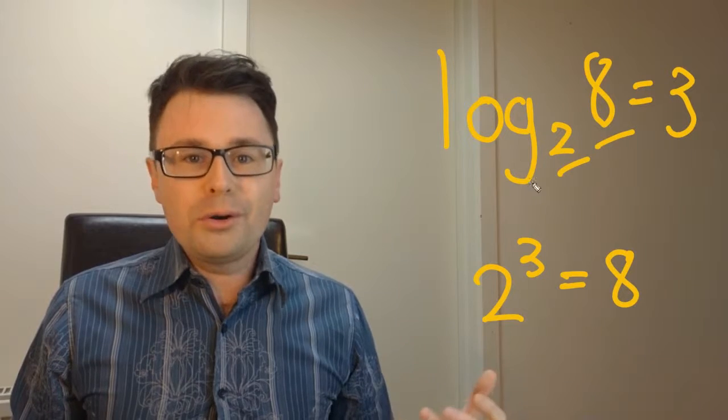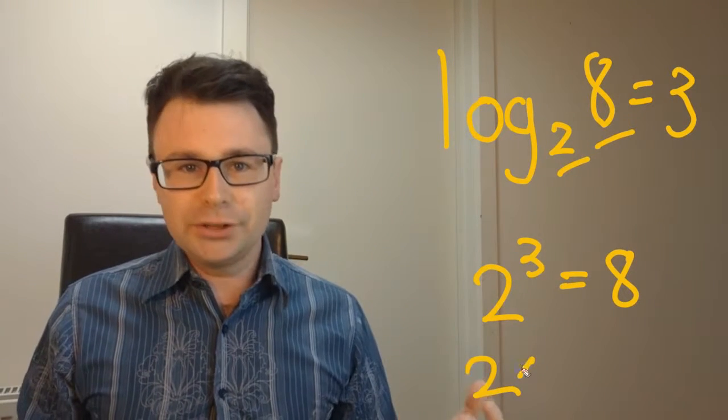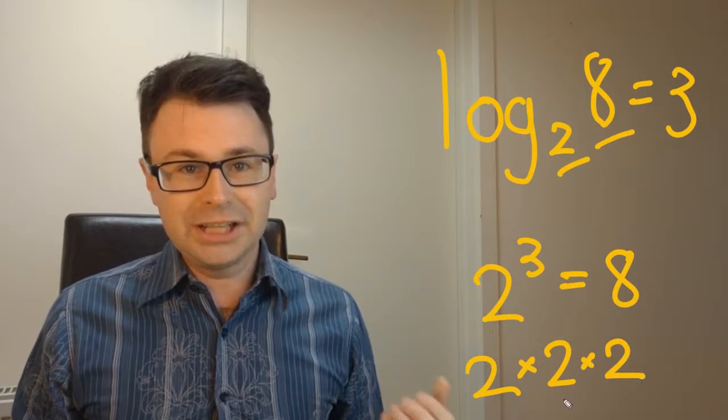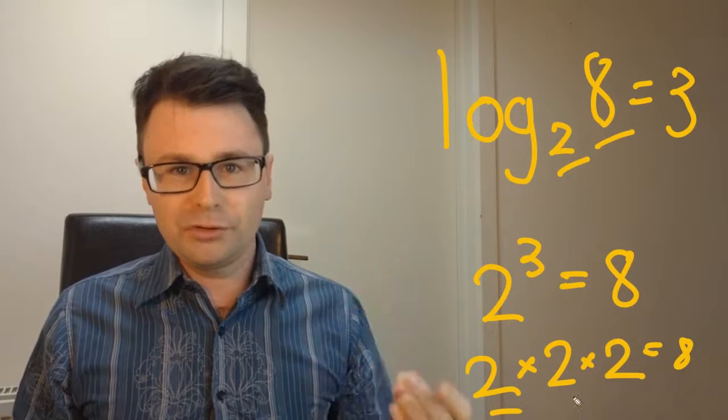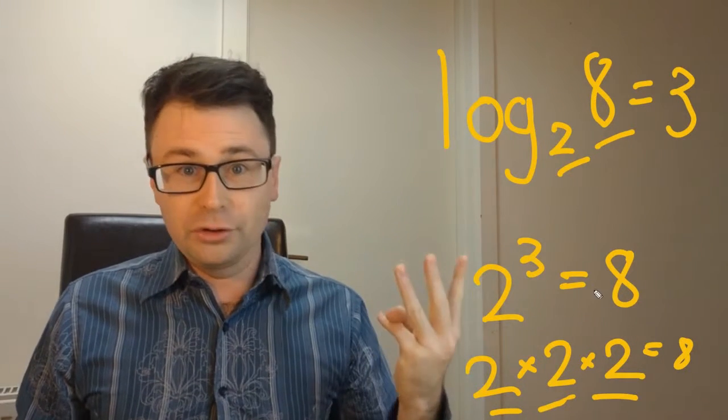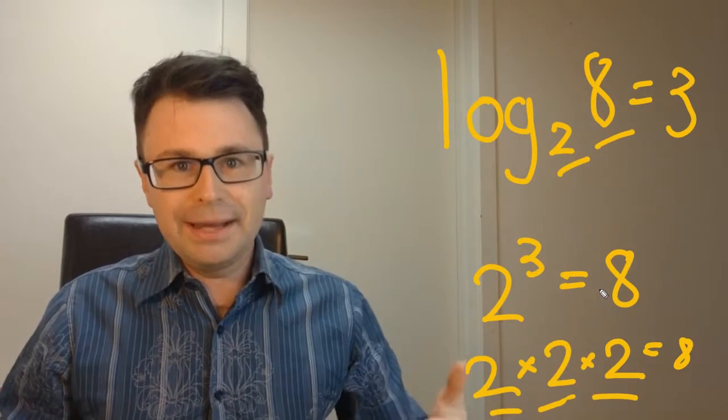In other words, if I've got log base 2 of 8, this is basically asking how many 2s do I need to multiply by each other to get to that 8? So it's 2 times 2 times 2. Three 2s are required to get to 8, so the answer is 3. This literally means 3.